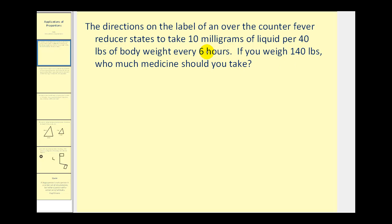We're going to write two rates that compare the amount of medicine to body weight. The first rate will be 10 milligrams per 40 pounds of weight. 10 milligrams to 40 pounds must equal the rate of milligrams to 140 pounds. So we'll say x milligrams to 140 pounds.